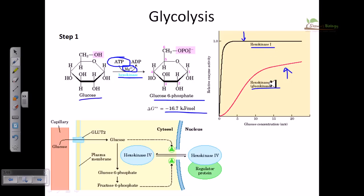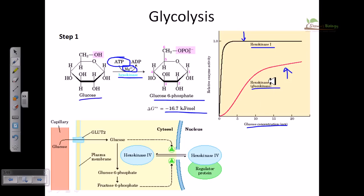Hexokinase I and hexokinase IV work in different manners as seen in their graphs. Hexokinase I is produced in a constitutive manner, meaning its concentration remains at a constant level at all times. But hexokinase IV concentration varies over time, showing a sigmoidal curve — and a sigmoidal curve indicates that the enzyme is controlled by allosteric regulation.